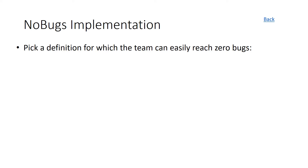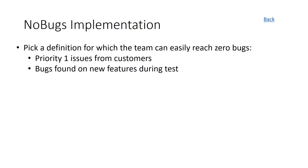The first step is you pick a definition for which the team can easily reach zero bugs — a definition for which there is a small number of active bugs. It might be priority one issues from customers, priority one issues from customers reported in the last week, or bugs found on new features during test. What I'm trying to do is pick a definition that has a small number of important bugs in it.